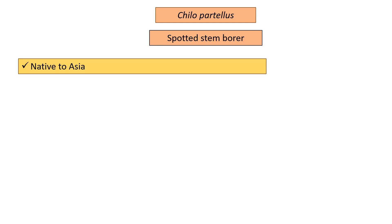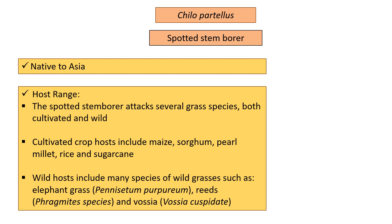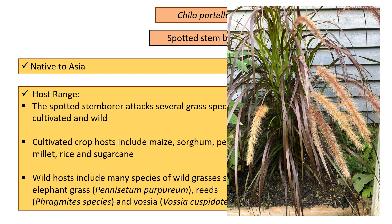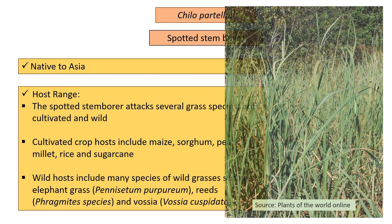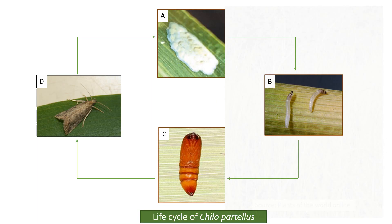Chilo partellus is native to Asia. The spotted stem borer attacks several grass species both cultivated and wild. Cultivated crop hosts include maize, sorghum, pearl millet, rice, and sugarcane. Wild hosts include many species of wild grasses such as elephant grass, scientifically known as Pennisetum purpureum, reeds, Phragmites species, and Vossia, scientifically known as Vossia cuspidata.